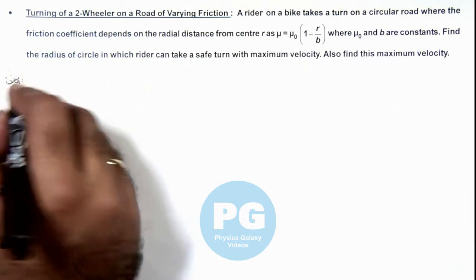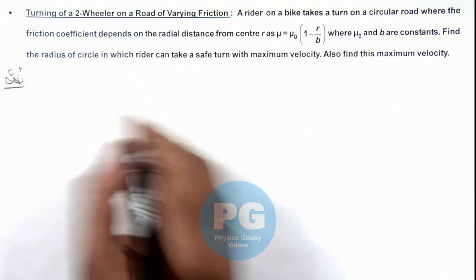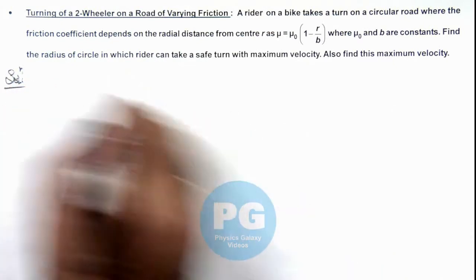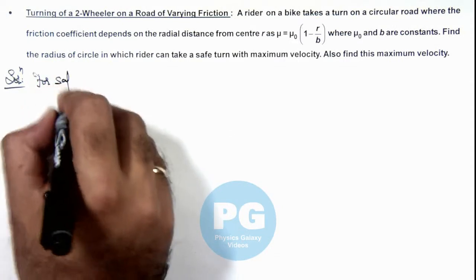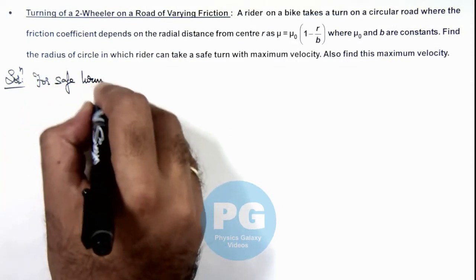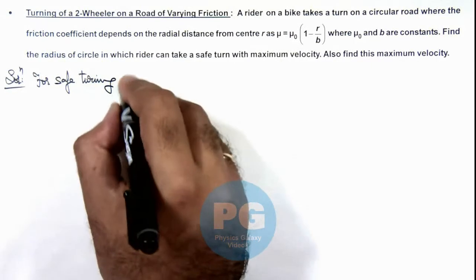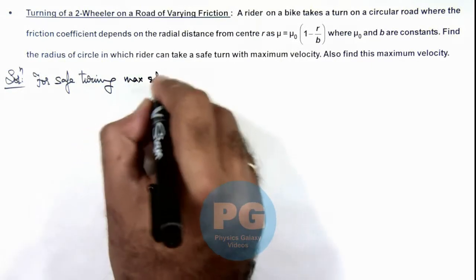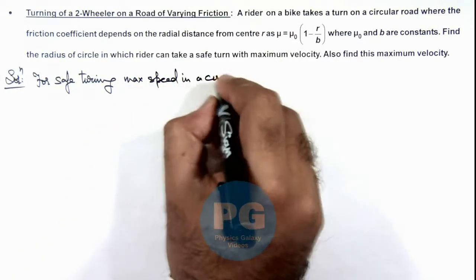In this situation, we can make use of the concept we have studied in concept videos: for safe turning, maximum speed in a circular track